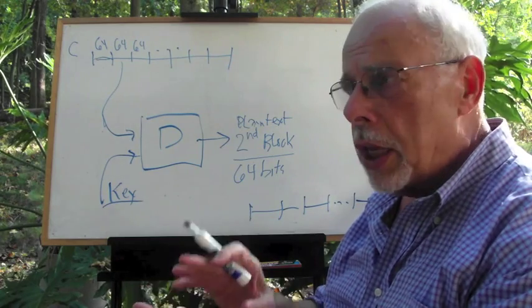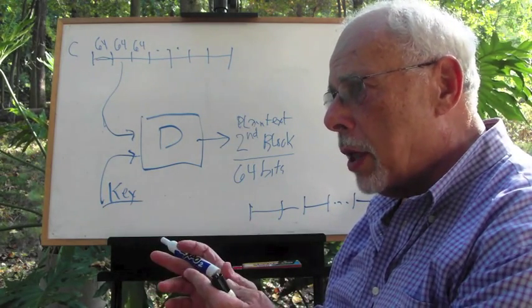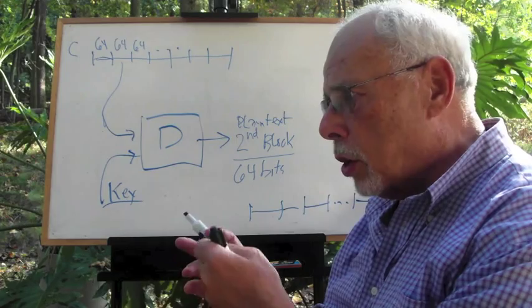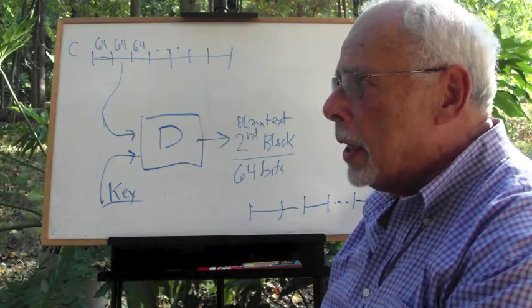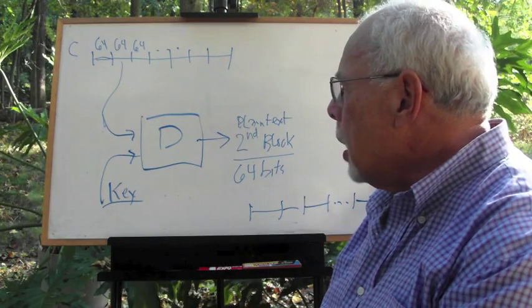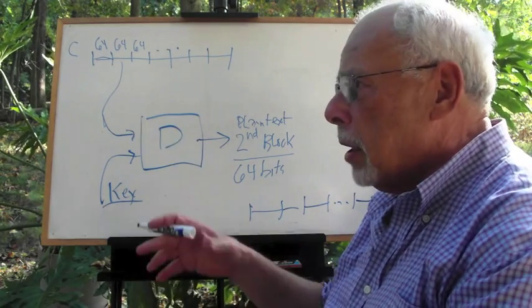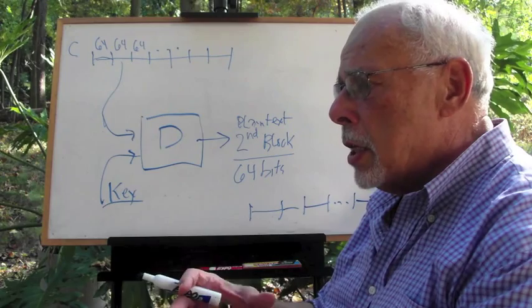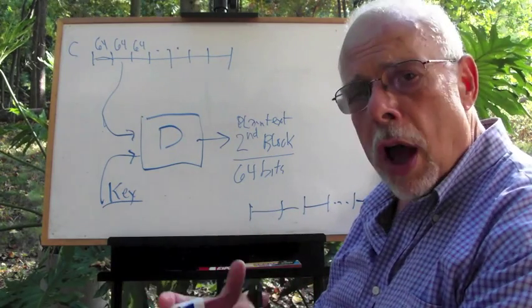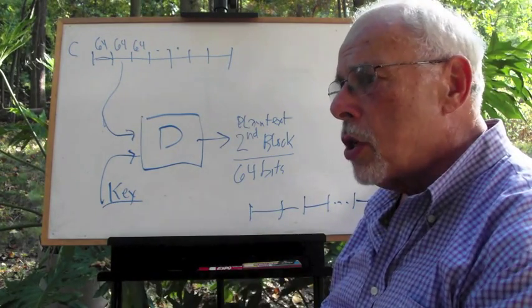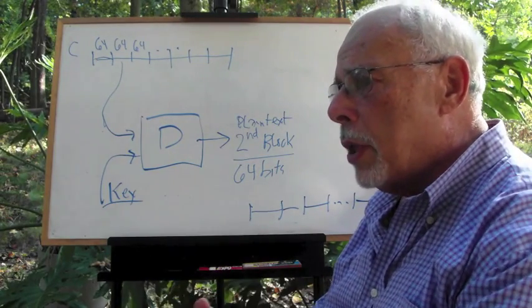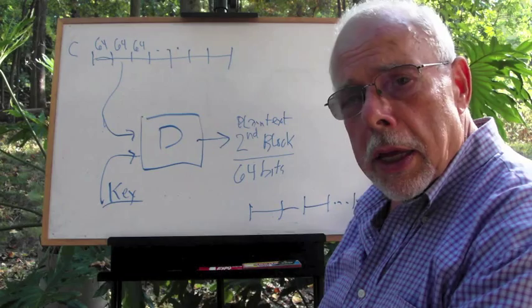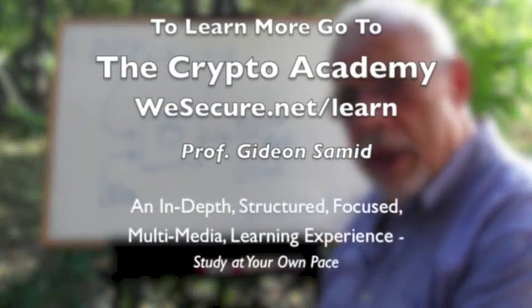It is a block cipher. It is symmetric—you use the same key for encryption and decryption. The size of the key is 56 bits. And inside, the operation is successive rounds of transposition, substitution, split, concatenation, and bitwise operation. And that's what DES is.